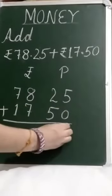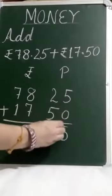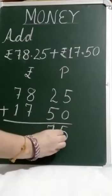5 plus 0 is equal to 5. 2 plus 5 is equal to 7. Then we add rupees.